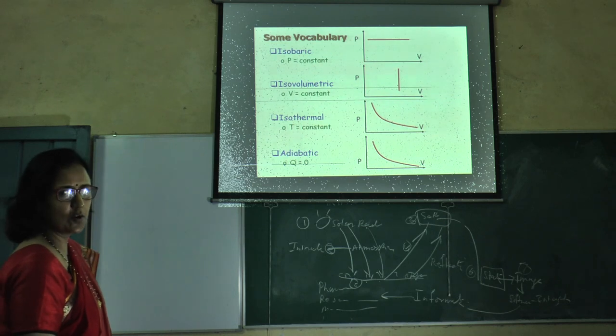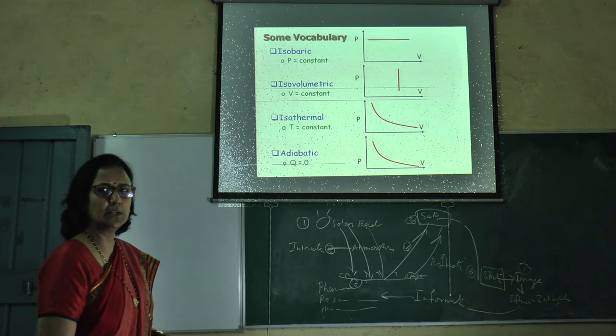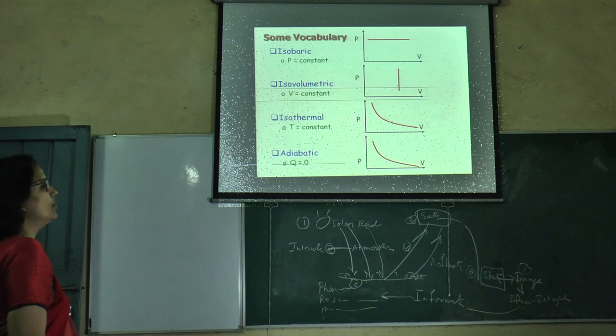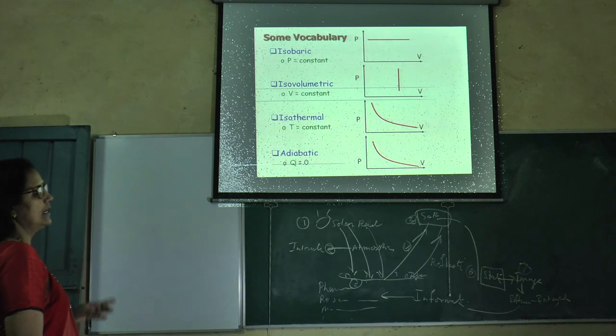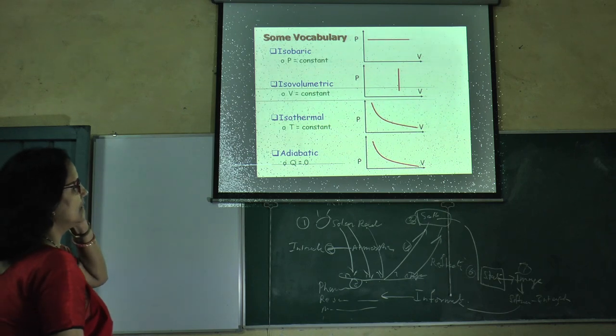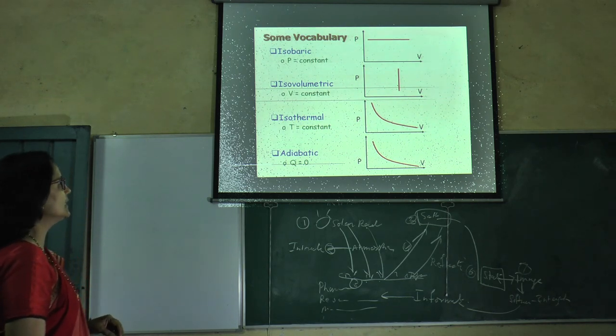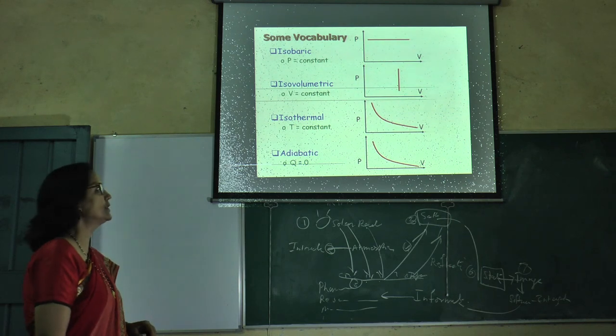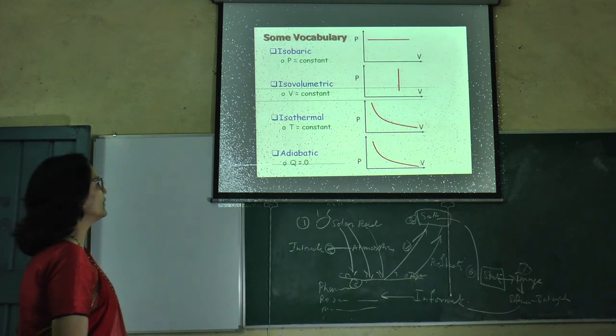Some types of processes are given here. There is an isobaric process in which pressure remains constant throughout the system. Graph is given of pressure versus volume. Second one is isovolumetric process where volume is constant with increase in pressure. Third one is isothermal process where temperature remains constant, and hyperbolic curve is obtained on the pressure-volume graph.